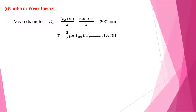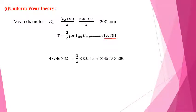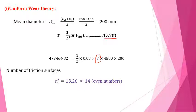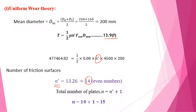The equations used are the same as for the single plate clutch, and are equally applicable to multiple plate clutches. Using equation 13.9F for the uniform wear case and substituting the torque, coefficient of friction, axial force of 4.5 kN, and mean diameter of 200 mm, the number of friction surfaces n' is found to be 13.26. This is rounded up to the next even number, giving n' = 14, and therefore the total number of plates is 14 + 1 = 15.